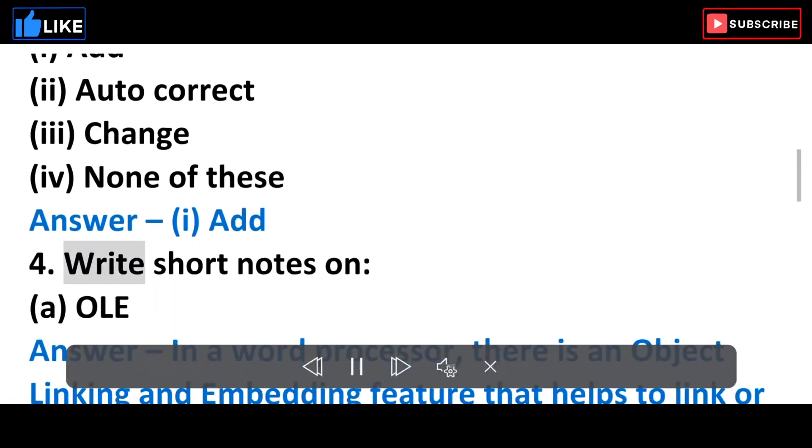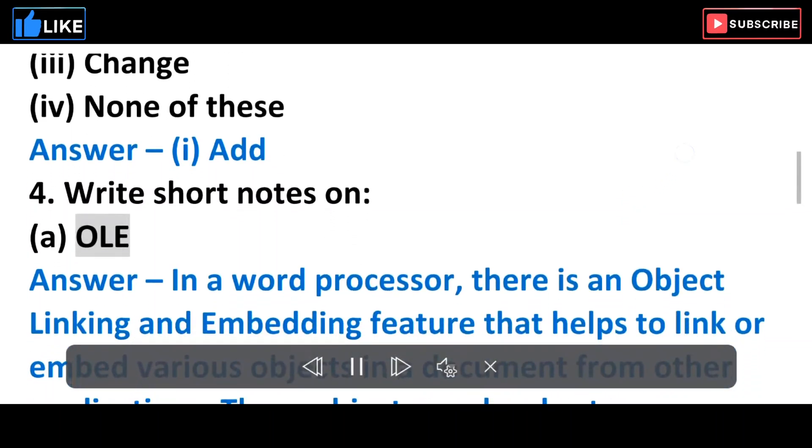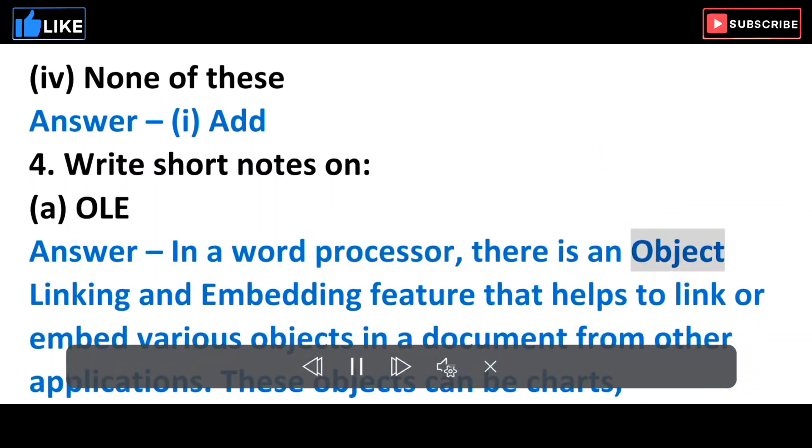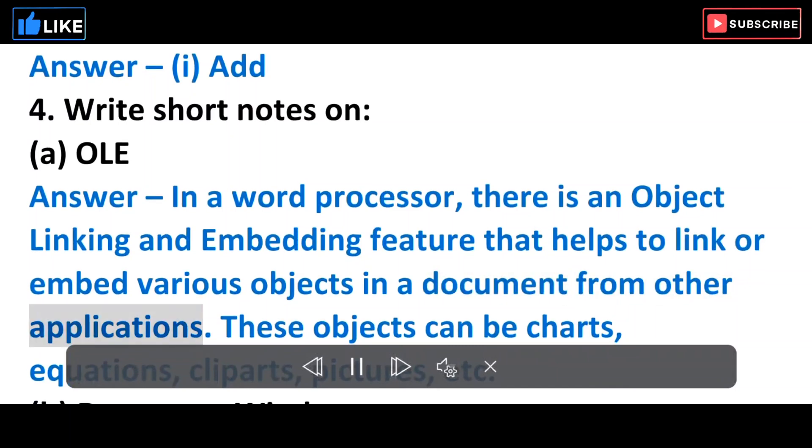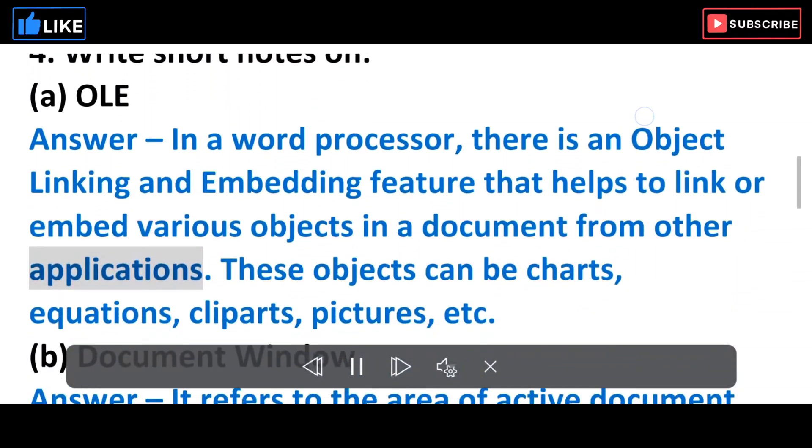4. Write short notes on: A. OLE. Answer: In a word processor, there is an Object Linking and Embedding feature that helps to link or embed various objects in a document from other applications. These objects can be charts, equations, cliparts, pictures, etc.